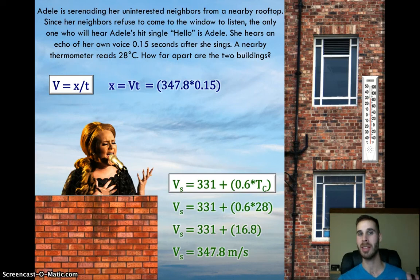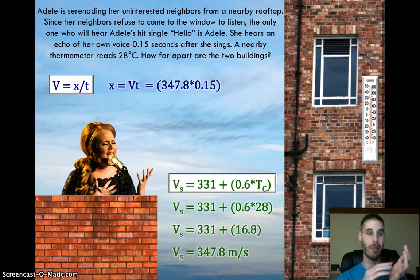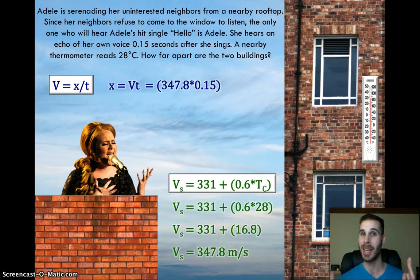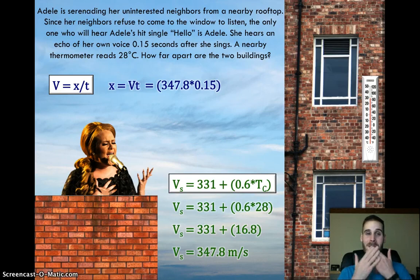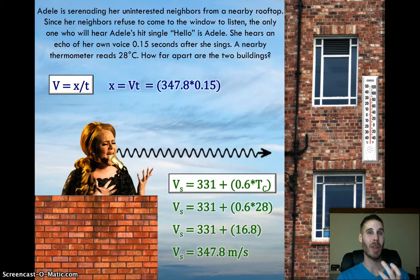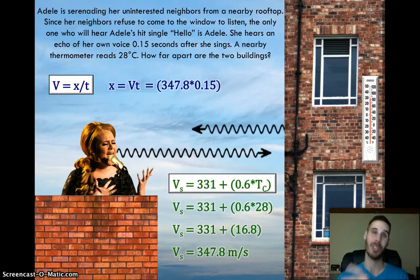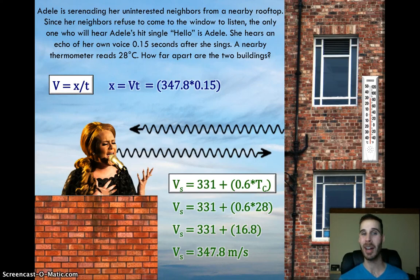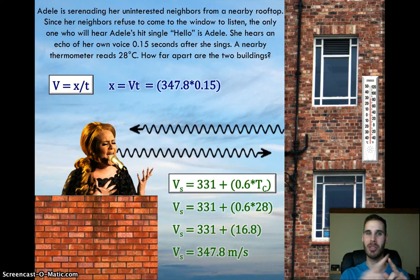So you'd think that that would be it. Now we can plug in our calculators and we'll get our answer. But nope, not quite. Some of you might have figured this out right off the bat, but this is not actually going to give us the right answer for how far apart these two buildings are. Now why is that? Well, it's because this is an echo problem. What does that mean? That means that the sound is going to travel from Adele towards the building, but then it's also going to travel from the building back to Adele. So that's inevitably going to complicate our problem because at first we thought we were just solving a distance problem, but really it's an echo distance problem. So something has to change here.